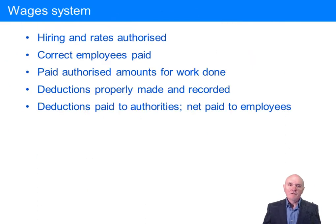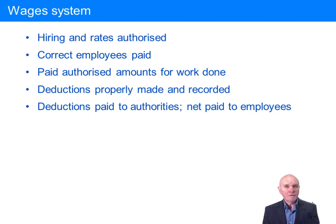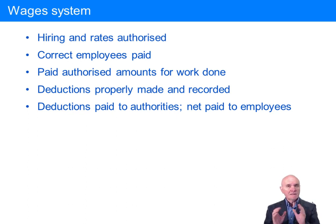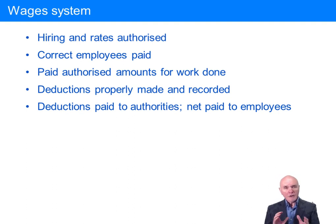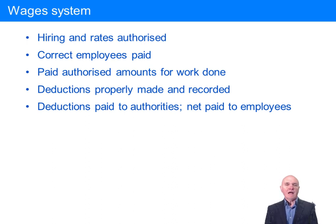We've looked at the sales and purchases systems in some detail. We'll go a bit faster through the remaining systems — wages, inventory, cash, capital expenditure — because you've got the idea. You're thinking: what can go wrong? How can we prevent it? How can we detect it? How can we work in authorizations and reconciliations?